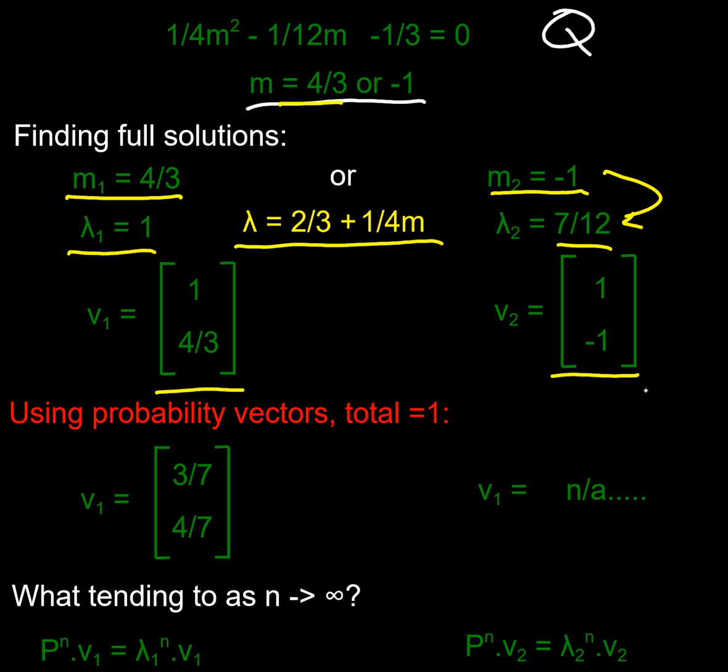Now we know that these must be probability vectors to work, and therefore the total must be one. So if I took my one and four thirds, that total is seven thirds, doesn't it? So I'd have to multiply by three sevenths, so I get my three sevenths, four sevenths vector line. Then a problem on the right hand side, because if I add those two together I get zero because I got one plus minus one, so I can't really create a probability version of that uniquely, can I?